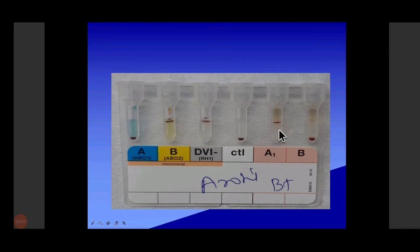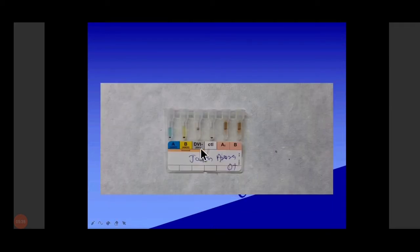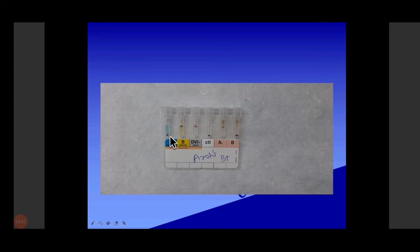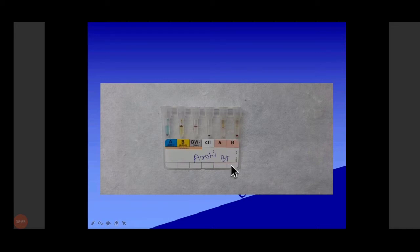In B positive, there will be anti-A, so anti-A is present at the top. Anti-B is negative, so it is B positive. Here you can see A negative, B negative, but Rh positive — both anti-A and anti-B are present — so it is O positive. Here: absence of A antigen, presence of B antigen, presence of Rh — and presence of anti-A. So B antigen, anti-A: it is B positive.